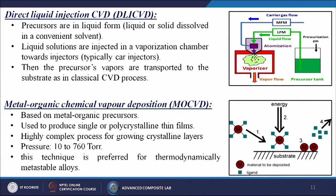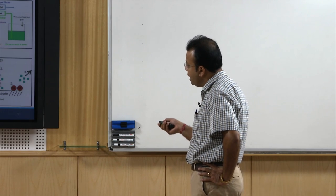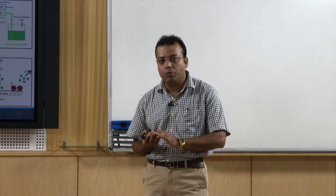Metal organic CVD (MOCVD) is based on metal organic precursors used to produce single or polycrystalline thin films; it is a highly complex process for growing crystalline layers at pressures of 10 to 760 torr. This technique is preferred for thermodynamically metastable alloys. Metal precursors are used with a high energy source; the material M with ligands (functional groups) reacts with the substrate, the ligands release, and only the metal ions bond with the substrate.